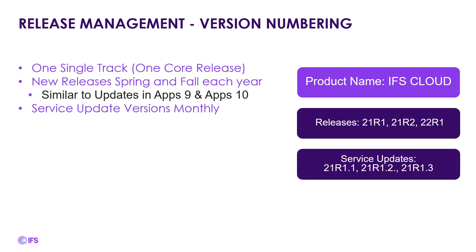The release management for the version numbering — to be clear, the product name is IFS Cloud. For those customers that have been around for a while, we've had IFS Apps 8, 9, and 10, and think of this kind of as Apps 11, but it's being called IFS Cloud. We're going to have biannual releases for this each spring and fall to do major functionality type releases, and then we'll have service updates monthly — patching type items.